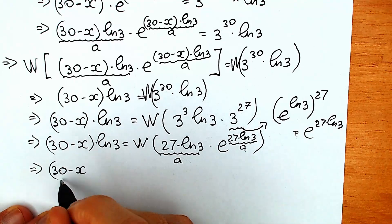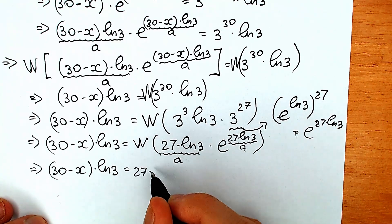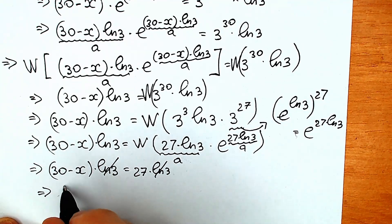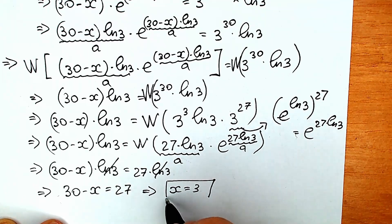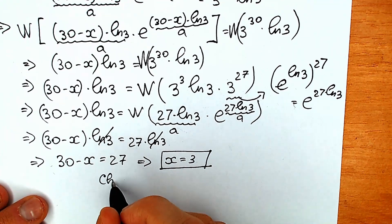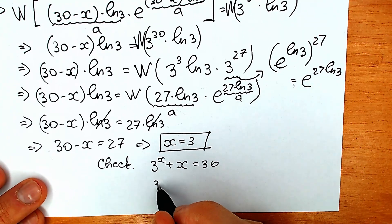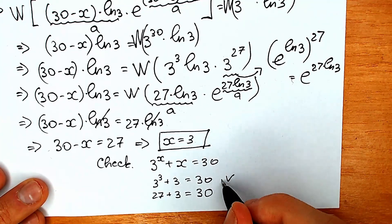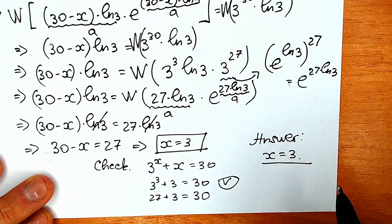So we have 30 minus x times natural log 3 equal to 27 times natural log 3. We can cancel natural log 3 from both sides, giving 30 minus x equals 27, so x equals 3. Let's verify: 3 to the power 3 plus 3 equals 27 plus 3 equals 30. Correct! You can also see the point of intersection on the graph, which confirms our answer.